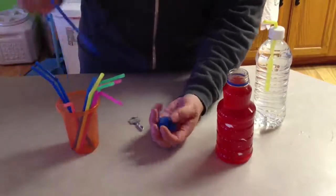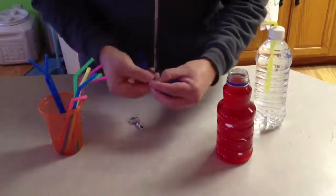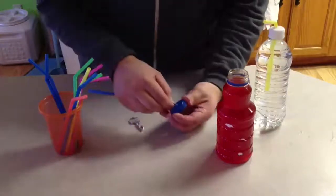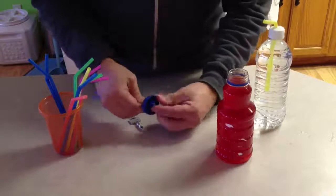Take any drinking straw, crimp, place through the hole, and pull.